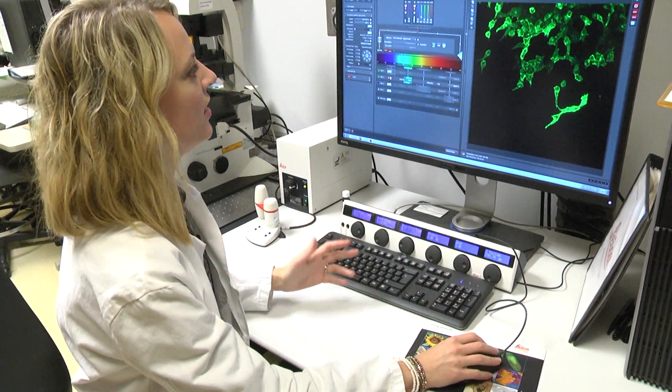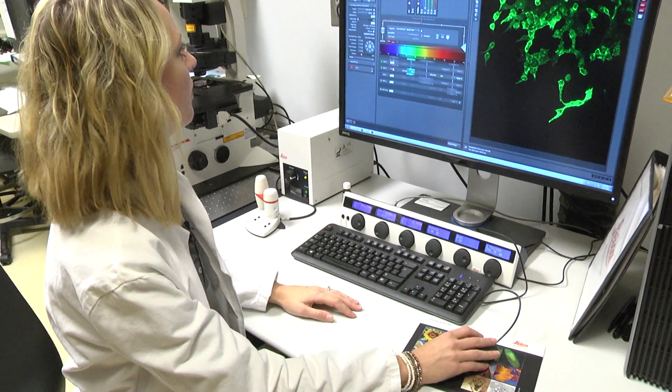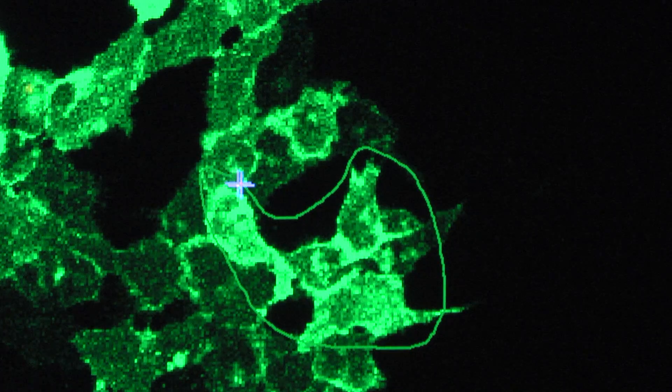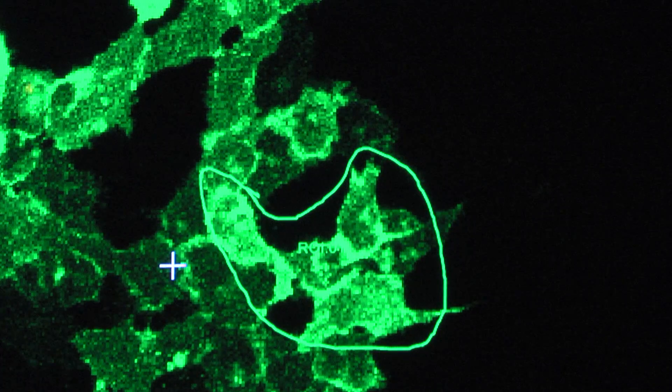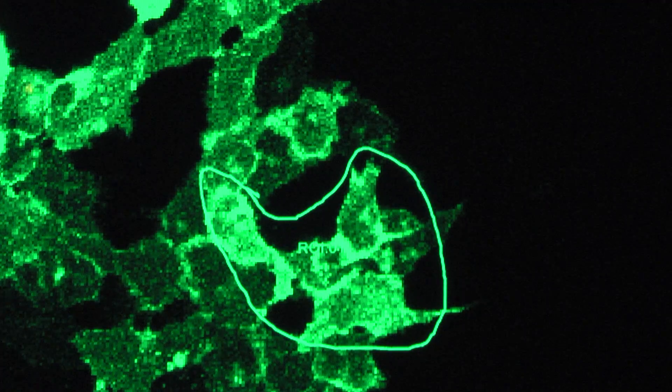So once I have the cells of interest that I want to photo-convert, I can then draw a region of interest around those cells using the software. So to begin, all our cells are green.